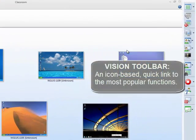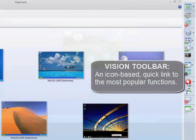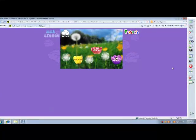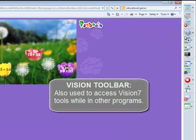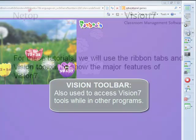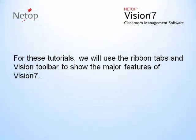The Vision Toolbar is an icon-based quick link to the most popular features and functions. It also lets you access Vision Tools while in other programs. For these tutorials, we'll use the Ribbon Tabs and the Vision Toolbar to show the major features of Vision 7.